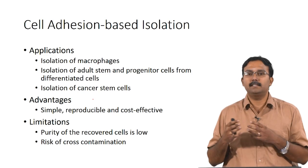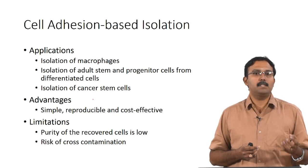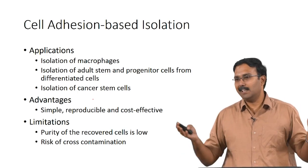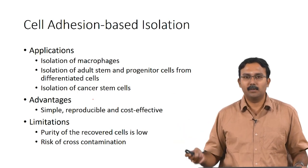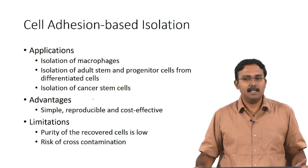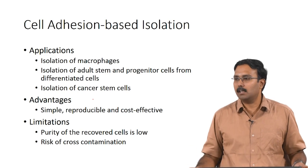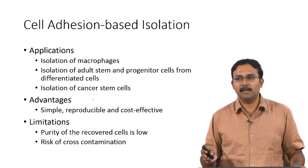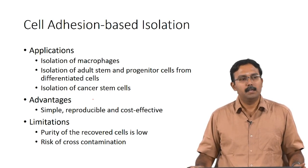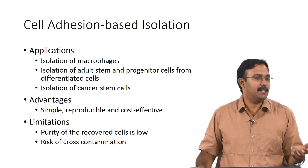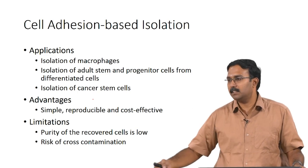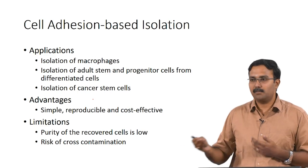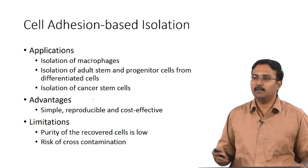The advantage of adhesion-based isolation is that it is a simple, reproducible, and cost-effective procedure. However, the limitation is that the purity of recovered cells is low since you get a mixture of cells that could adhere or be in suspension. There is also a risk of cross-contamination — bacterial or fungal contamination is one of the major challenges in cell culture and can completely spoil your cultures. Because of these disadvantages of low purity, people have looked at other techniques which are more specific for getting a specific cell type — you cannot always purchase cells and would have to isolate primary cells from tissues, requiring different approaches.